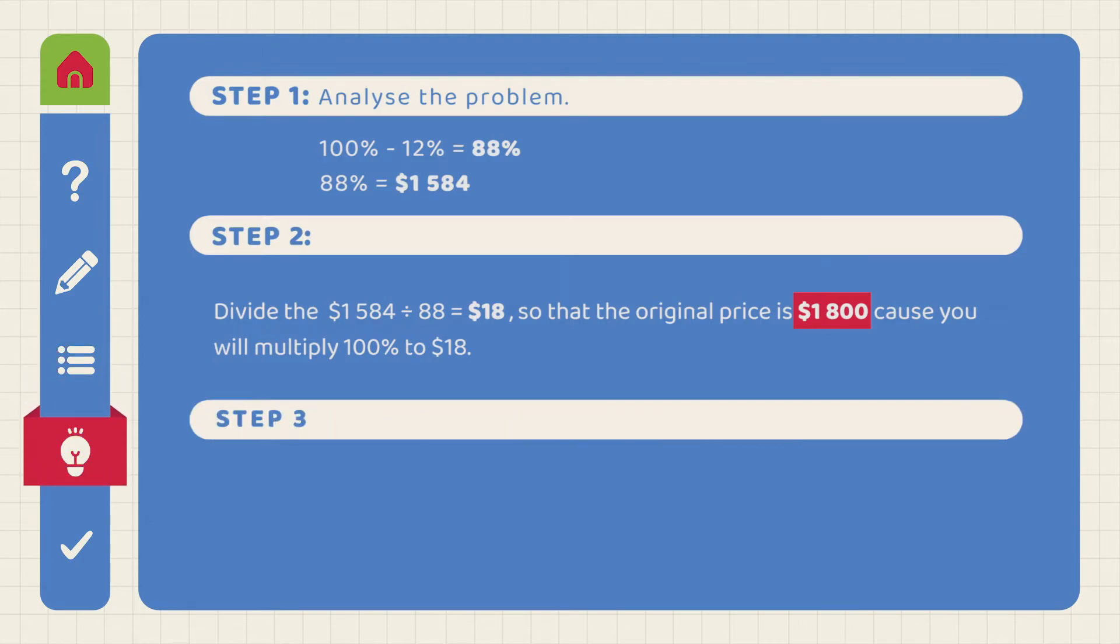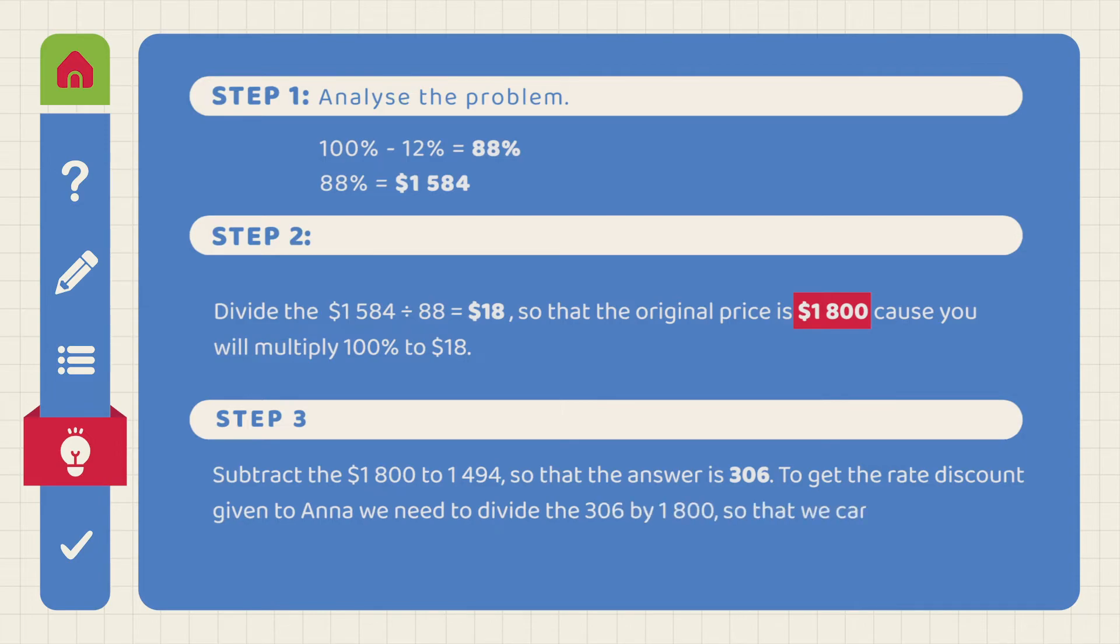Step 3. Subtract $1,800 minus $1,494. To get the rate discount given to Anna, we need to divide 306 by 1,800. Multiply 100 by 0.17.